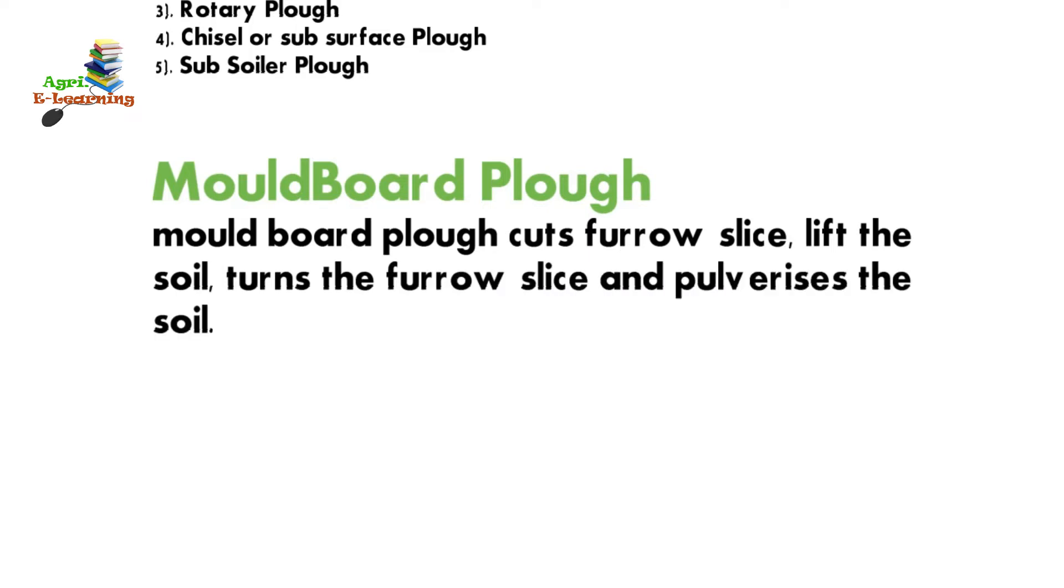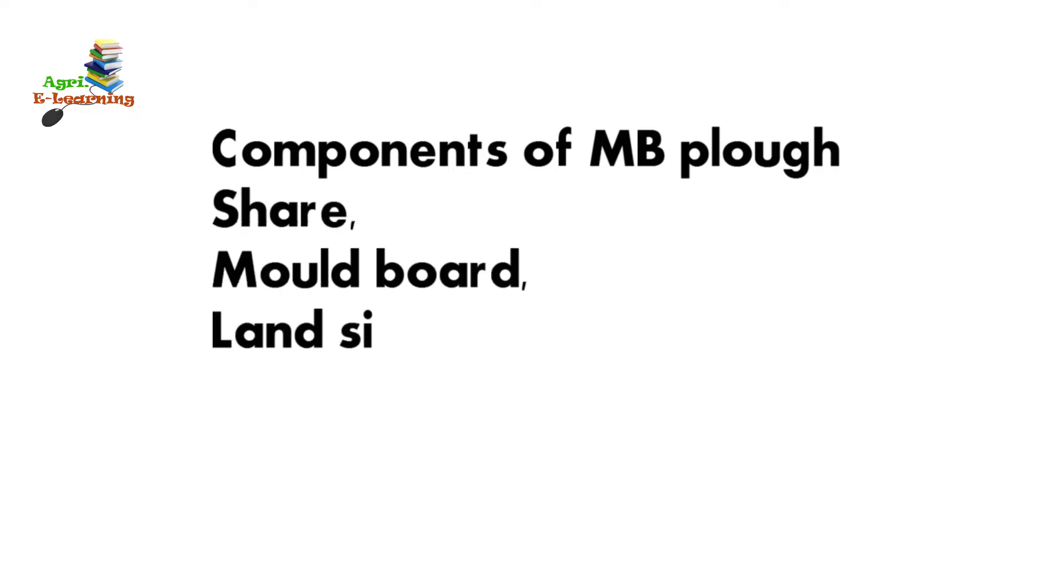It turns the furrow slice and pulverizes the soil. Components of moldboard plow: share, moldboard, land side, frog, and tail piece.